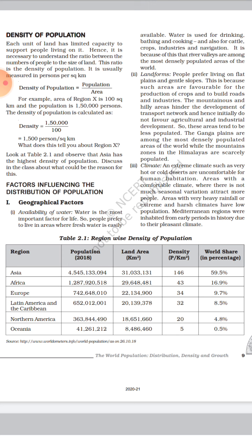The next factor is soil. Fertile soils are very important for agriculture and allied activities. Areas with fertile soils are always preferred by people to settle, as they can support agriculture. These places are generally more populated compared to areas with less fertile or arid soil. Thank you, students.